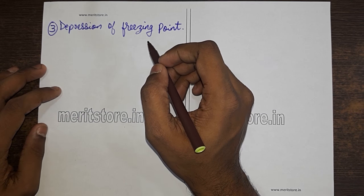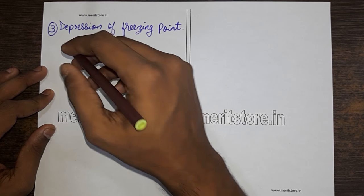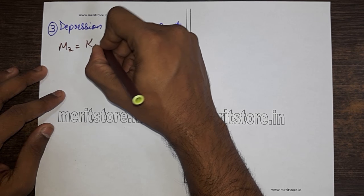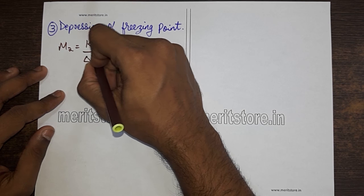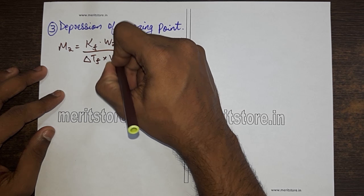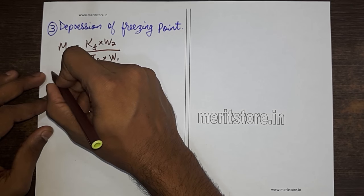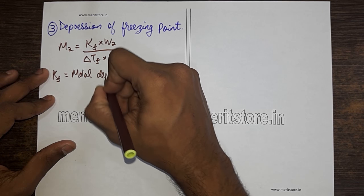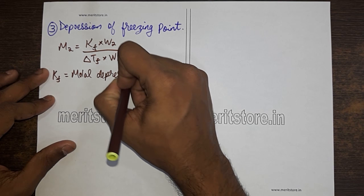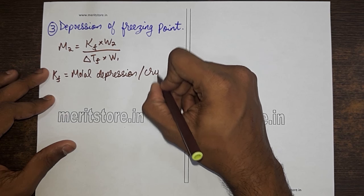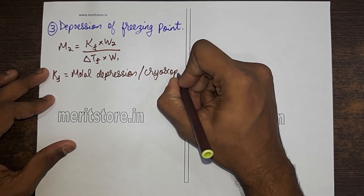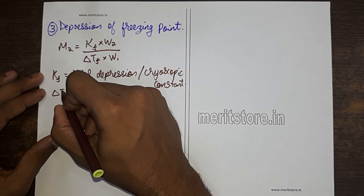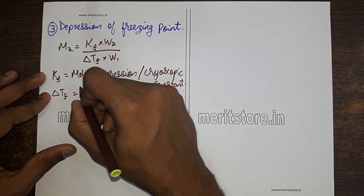The third colligative property is depression of freezing point. This can be calculated using the formula: m2 is equal to Kf·w2 upon ΔTf·w1. Here Kf represents the molal depression constant (cryoscopic constant) and ΔTf represents the depression in freezing point.